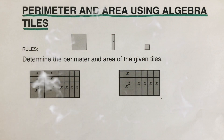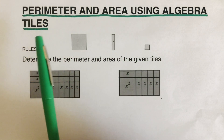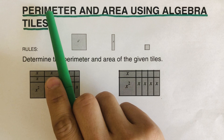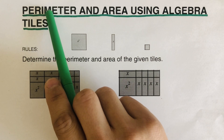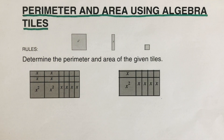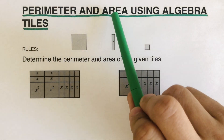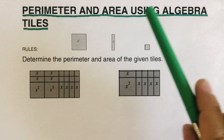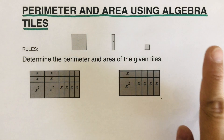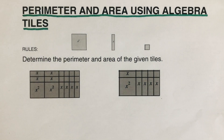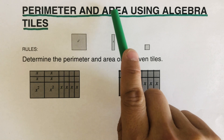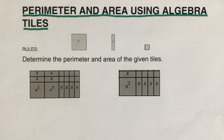Hello everyone, today we're going to talk about perimeter and area using algebra tiles. Perimeter will give us an idea on how to combine like terms, and the area will be used in the next lesson where we're going to factor using area as a product and area as a sum. I'll put the link to that video in the description box below and up here.